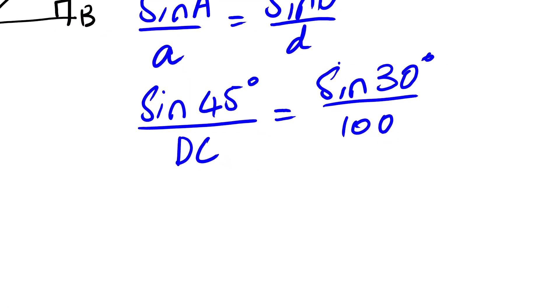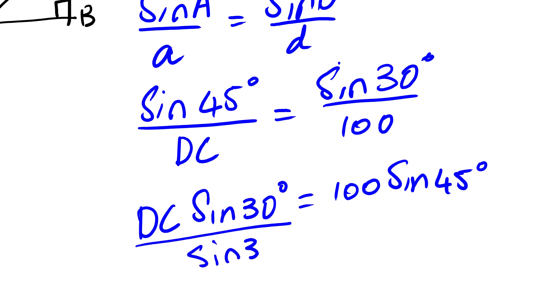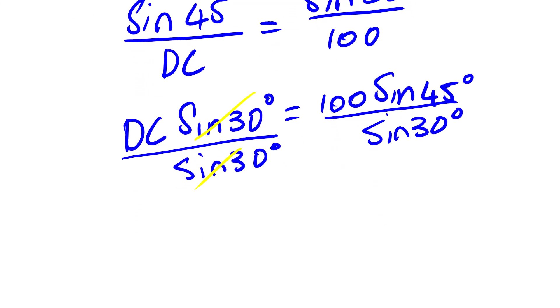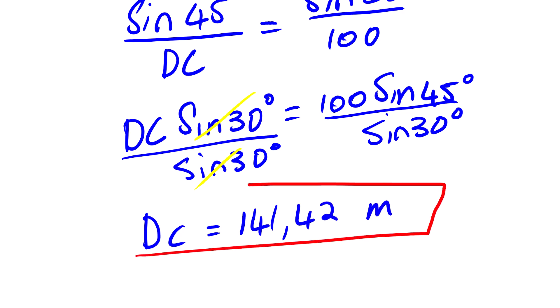We cross multiply, we have DC sine 80 equals to 100 sine 45. We divide both sides by sine 80. This will result into one, one multiplied by DC, it's actually DC, equals to. Then when you punch this on the calculator our answer will be 141.42 meters. This is our actual answer.